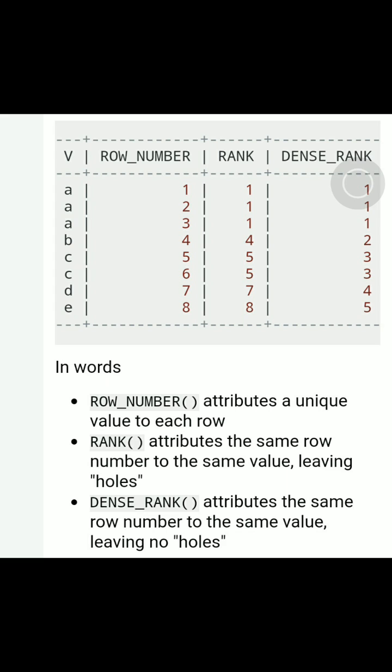Whereas coming to the difference between RANK and DENSE_RANK, RANK is like leaving holes, DENSE_RANK is like leaving no holes. If you see in this table under RANK, we have three ones: one for the first row, one for the second row, and one for the third row.